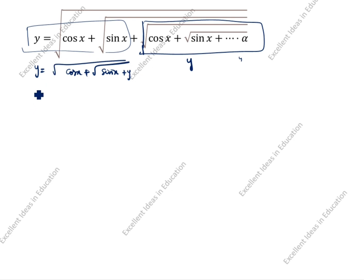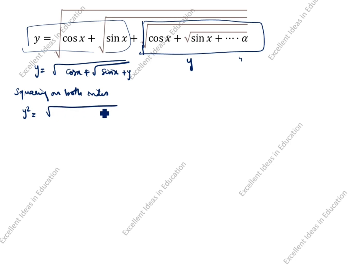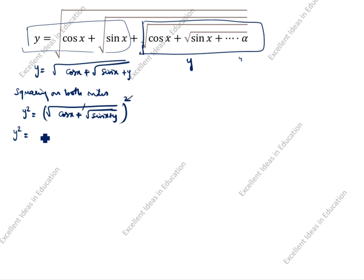So how we will write this one? Squaring on both sides — we will remove the square root, that's why squaring on both sides. So y squared is equal to root of cos x plus root of sin x plus y, the whole square. So y squared is equal to cos x plus root of sin x plus y, since the square root and square cancel.